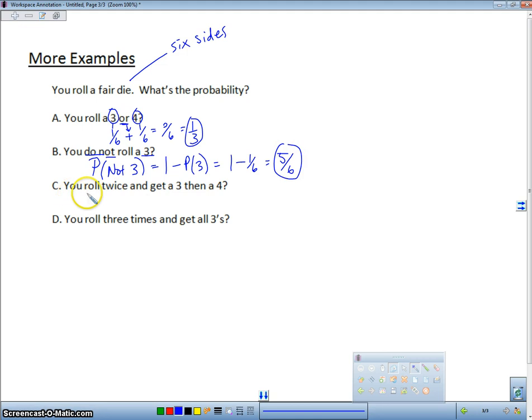So what's the probability I roll twice and I get a 3, then a 4. So what's the probability of getting a 3? That is 1/6. What's the probability of getting a 4? 1/6. And a then is the same thing as an and because I got to get both of these true. So that's multiplication. I'm using the multiplication rule. So that's 1 out of 36.